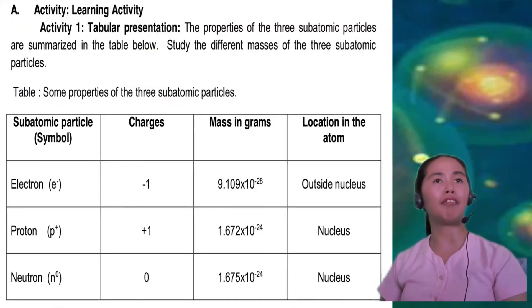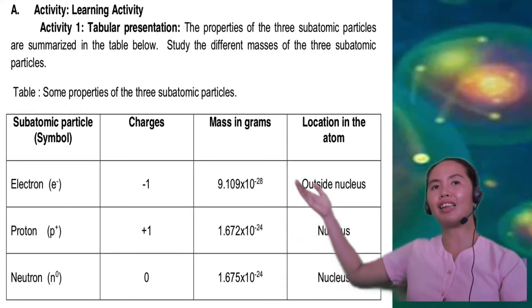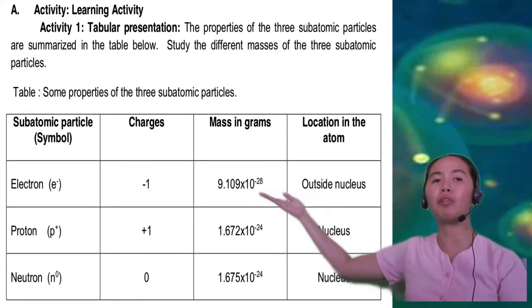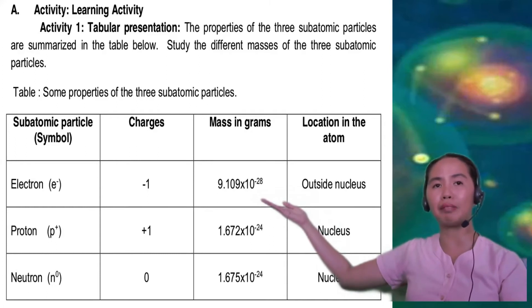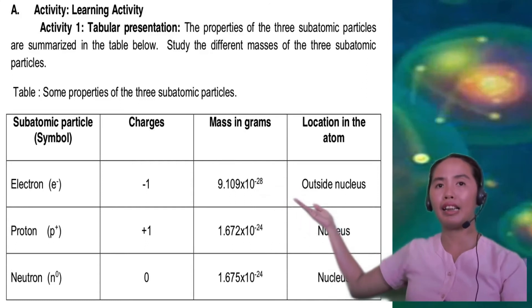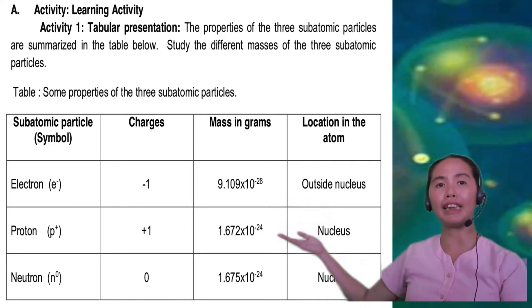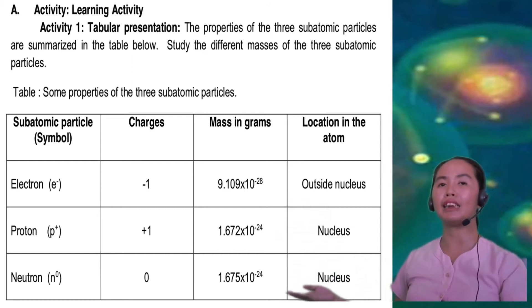So this time, we are now going to perform your learning activity sheet number 5. Activity number 1, tabular presentation. The properties of the three subatomic particles are summarized in the table below. Study the different masses of the three subatomic particles. Let's start with the electron. The charge is negative 1. Mass in grams, we have 9.109 times 10 to the negative 28. It is located outside the nucleus. Next, we have the proton. The charge is positive 1. Mass is 1.672 times 10 to the negative 24. And the location is in the nucleus. And lastly, we have neutron. The charge is 0. Mass is 1.675 times 10 to the negative 24. And it is located also inside the nucleus.